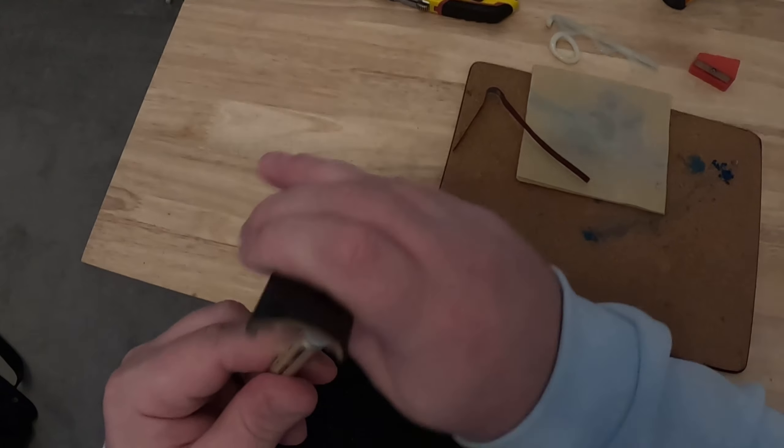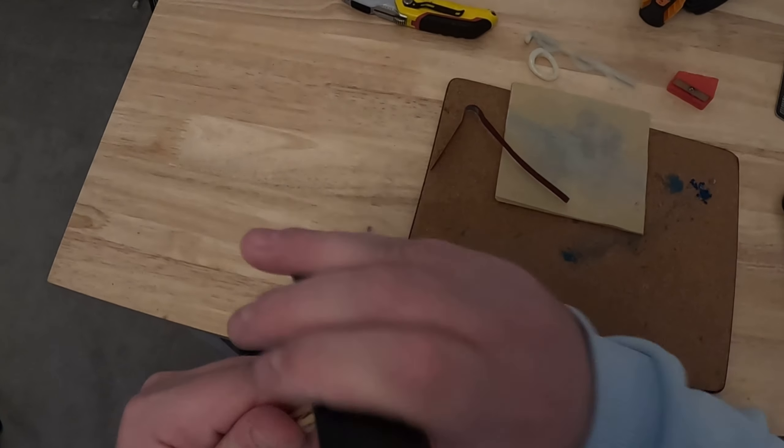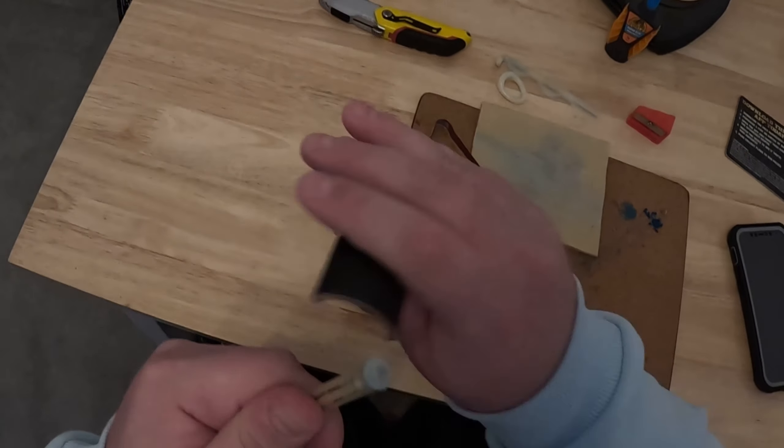Once that's done, I then get my tip shaper. This basically shapes the tip and gets it down to the required playing height that you play with.